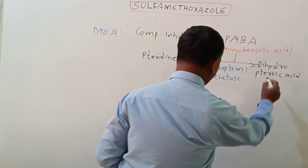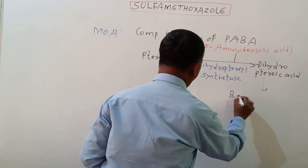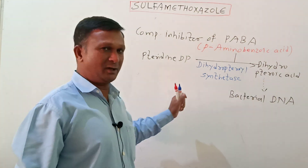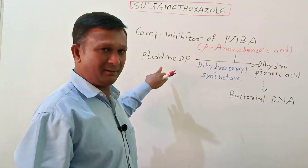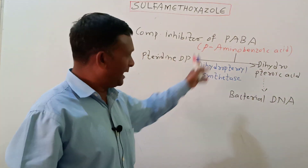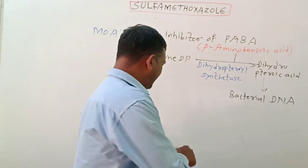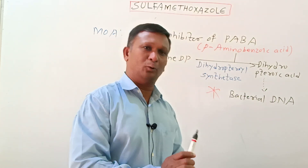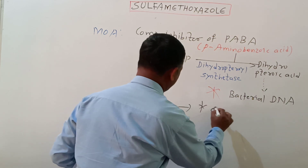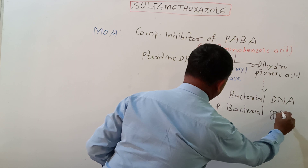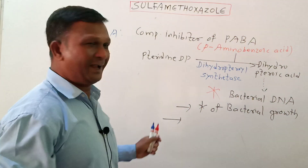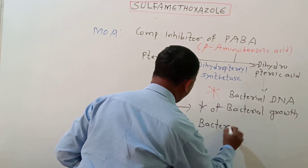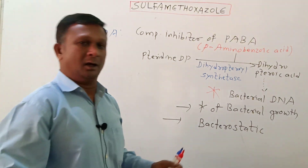When dihydropteroic acid is synthesized, it is further utilized in the formation of bacterial DNA. By inhibiting PABA, the conversion of pteridine diphosphate to dihydropteroic acid is blocked, and ultimately bacterial DNA synthesis is inhibited. As DNA synthesis is inhibited, bacterial growth is also inhibited, making sulfamethoxazole bacteriostatic in nature.